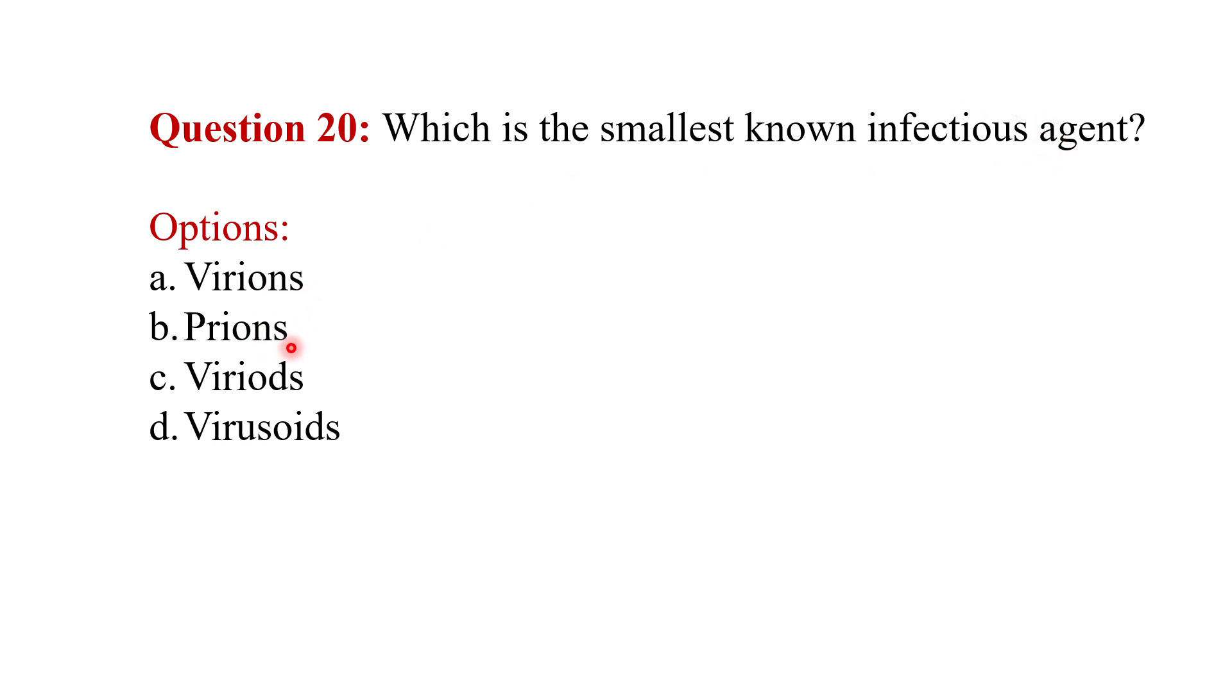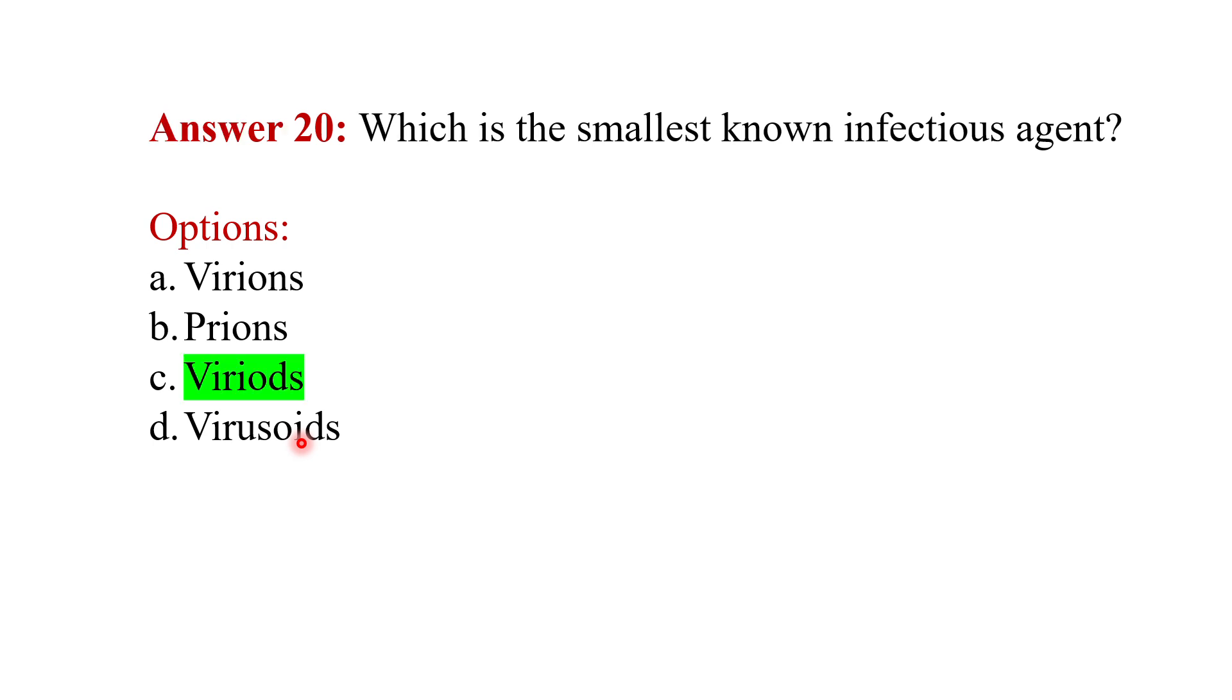Which is the smallest known infectious agent: virions, prions, viroids, or virusoids? The answer is viroids. This is all about a few MCQs on viruses. If you like the video, please like and comment below, and subscribe for more detailed videos on viruses. Thank you.